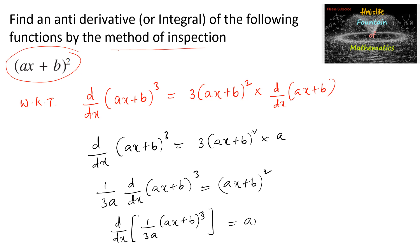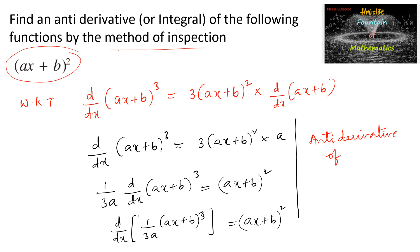...is equal to (ax + b) whole square. So the differentiation of that function equals (ax + b) whole square, and hence we can say that the antiderivative of (ax + b) whole square can be taken as 1 upon 3a into (ax + b) whole power 3.